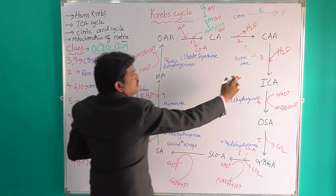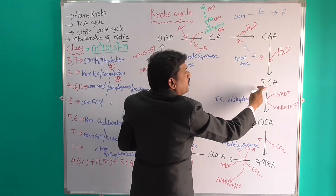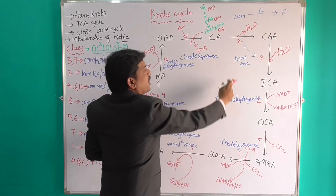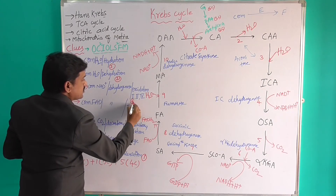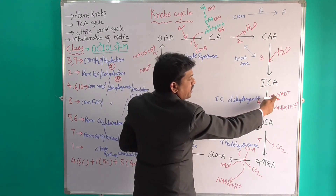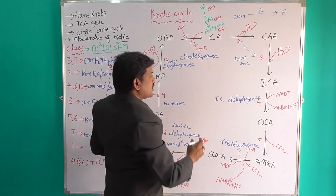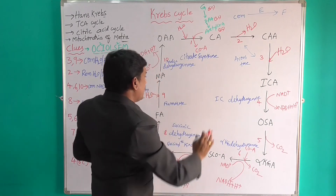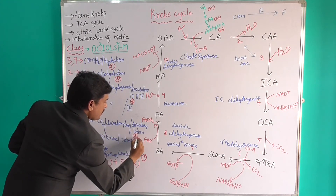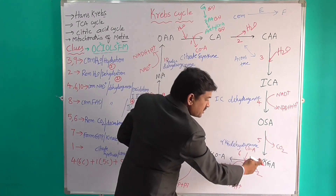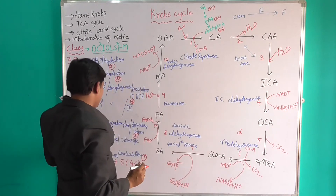Stage 3 name is Hydration: Cis-aconitic acid undergoes hydration to form Isocitric acid, catalysed by Aconitase enzyme. Stage 4 is Oxidation Number 1: Isocitric acid is combined with NAD⁺ to form Oxalosuccinic acid and NADH + H⁺, in the presence of Isocitric Dehydrogenase. Stage 5 name is Decarboxylation: Oxalosuccinic acid undergoes decarboxylation to form Alpha-Ketoglutaric acid, in the presence of Decarboxylase enzyme.